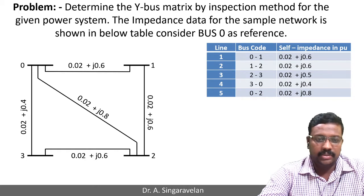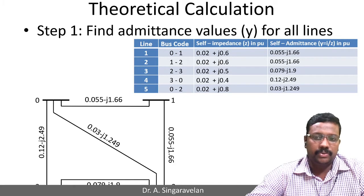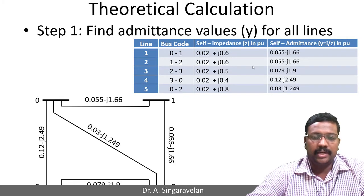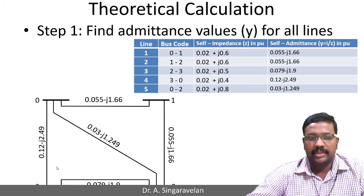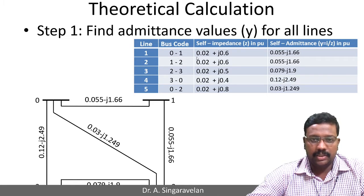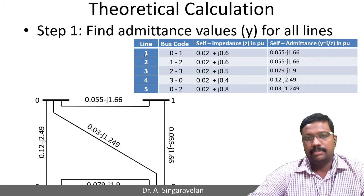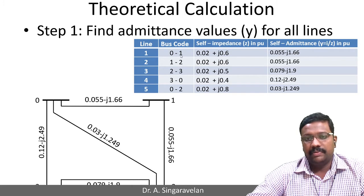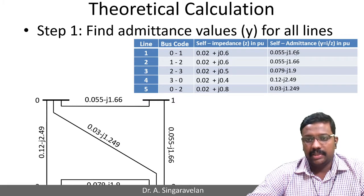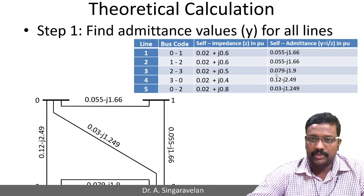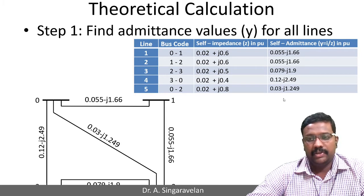The first step is to find the admittance for all the impedances given in the question. For example, from bus 0 to bus 1, the impedance value is 0.02 + j0.6. If you divide 1 by this impedance, you get the admittance. All impedance values need to be converted into admittance form and kept ready.